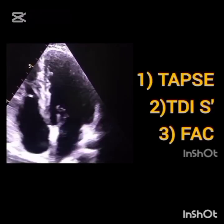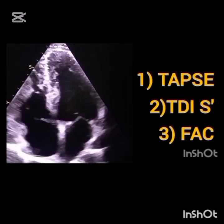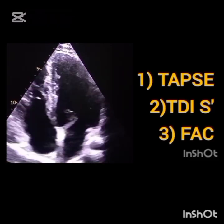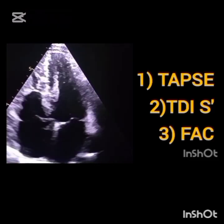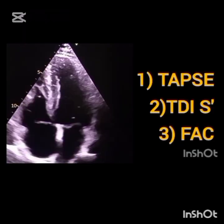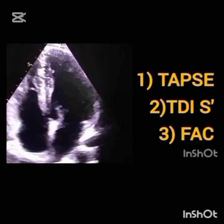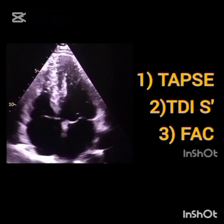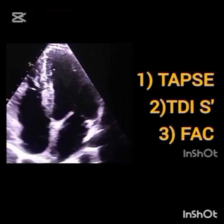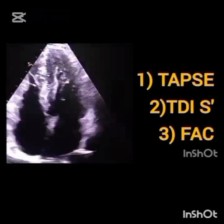We discussed the three most commonly used echocardiographic parameters: TAPSE — tricuspid annular plane systolic excursion; tissue Doppler imaging S' wave; and fractional area change. Each of these parameters has its strengths and limitations. But when combined together, they give a comprehensive and reliable evaluation of right ventricle systolic function. Always remember: no single measurement defines RV performance — use multiple approaches.